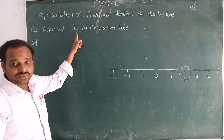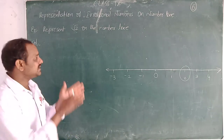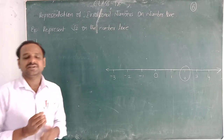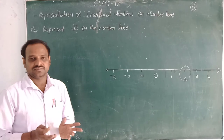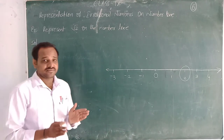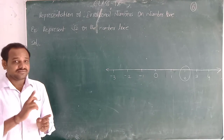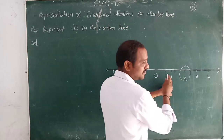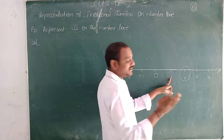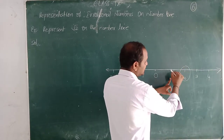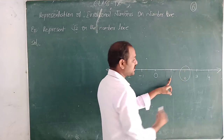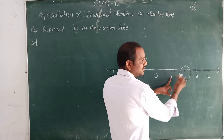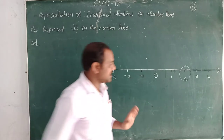What is the value of root 2? Already in the previous class, up to 3 decimal places we got 1.414. So that means the value of root 2 lies between 1 and 2. Root 2 equals 1.414, so it lies between 1 and 2 — it will be in the space between 1 and 2. Let's see how to represent it.